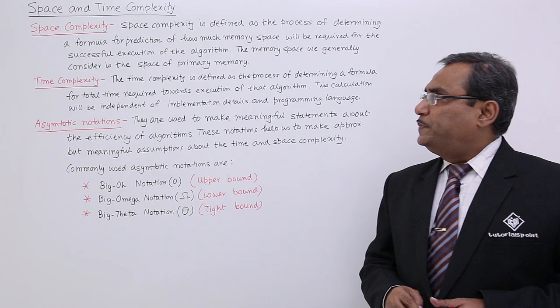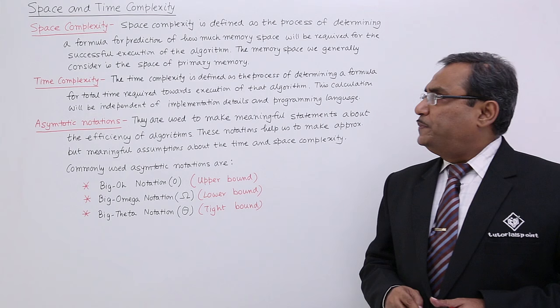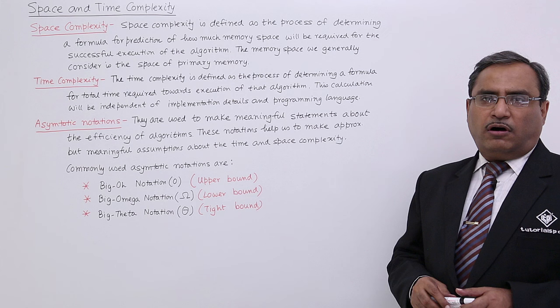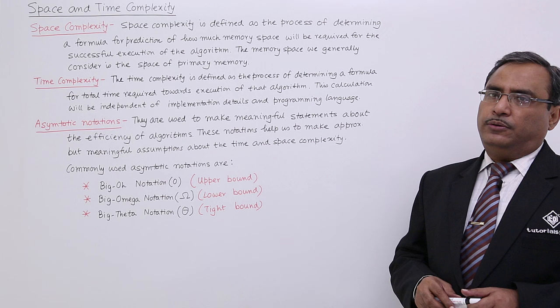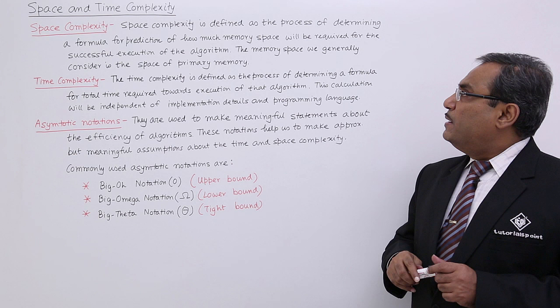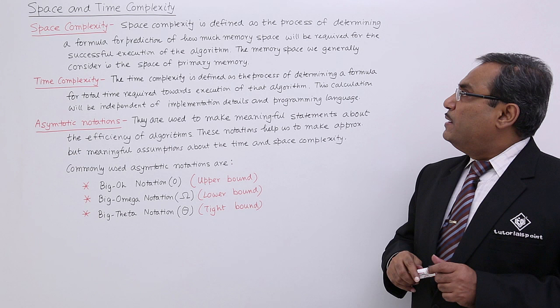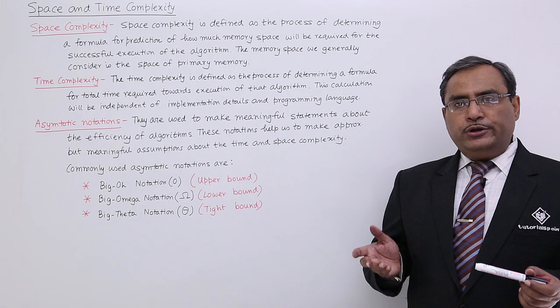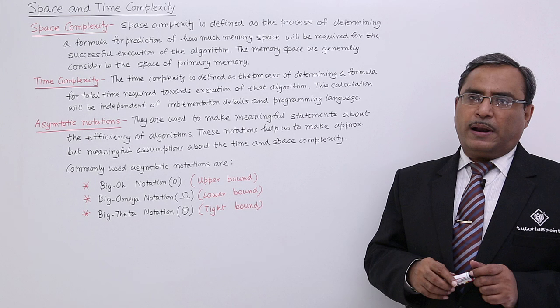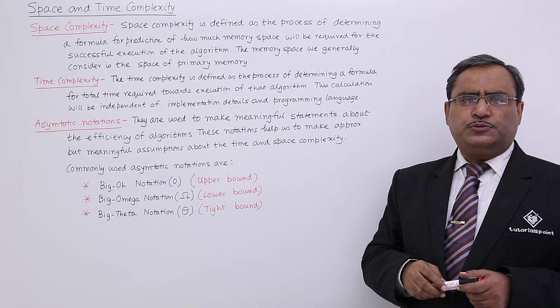Let us get the text here. Space complexity is defined as the process of determining a formula for prediction of how much memory space will be required for the successful execution of the algorithm — so, how much space it will require during its runtime. The memory space we generally consider is the space of the primary memory, because whenever a program executes, the program is to be loaded onto the primary memory. Then, during execution, how much space will it occupy — that will be decided by the space complexity.